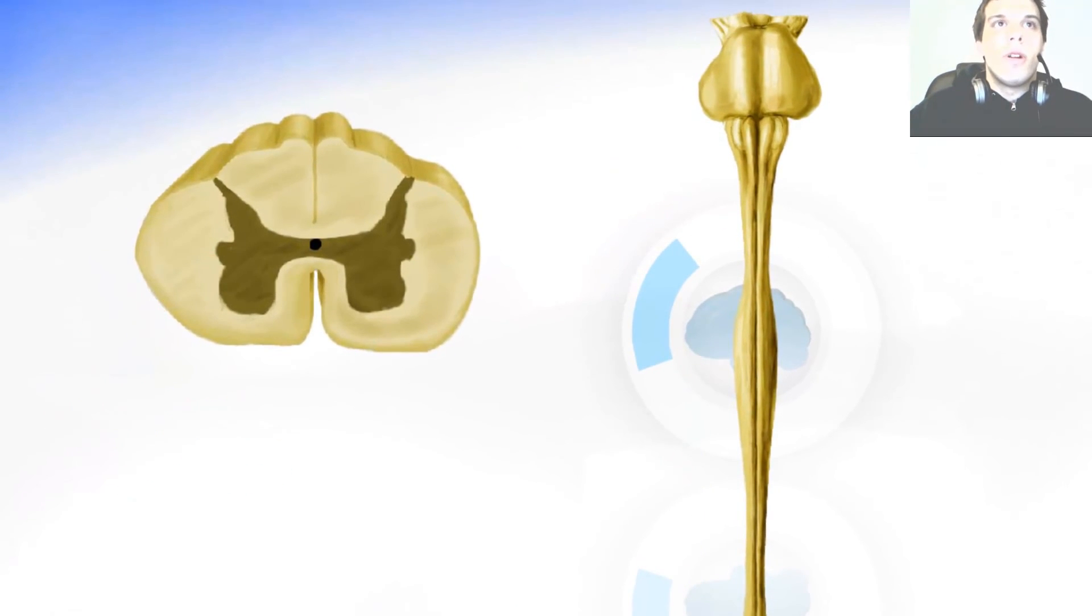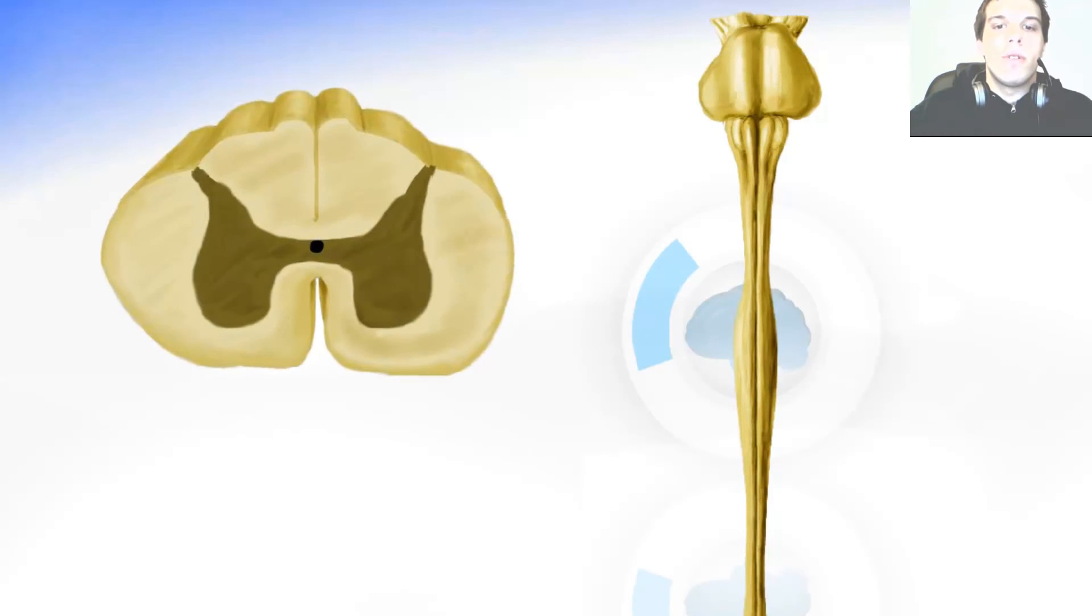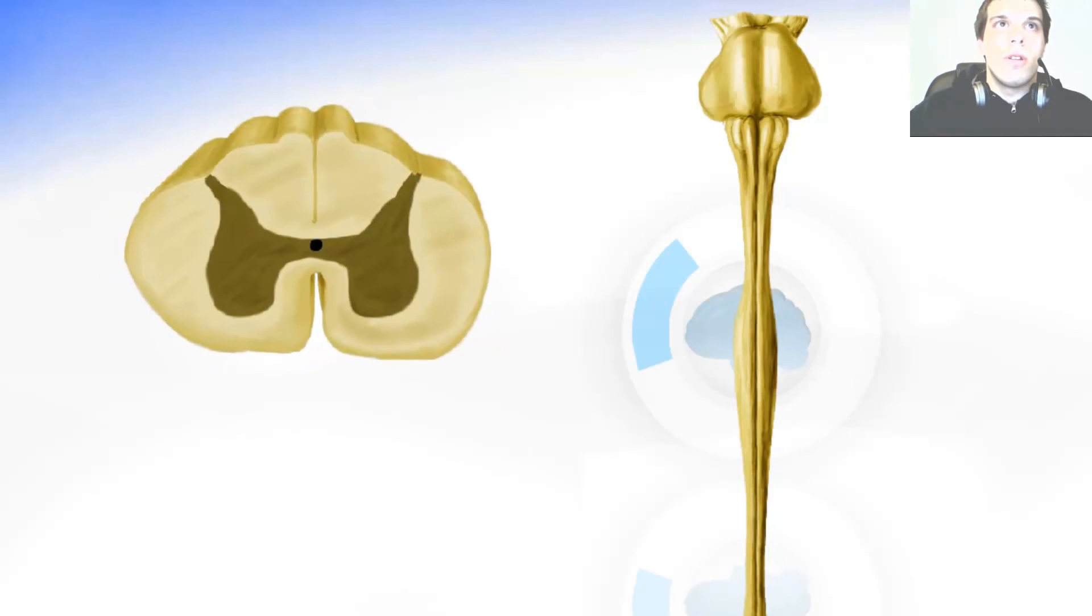Now the lumbar part is going to look different. It's going to be bigger and have different gray matter shape. And of course then comes the sacral part. It's going to be smaller and also a different gray matter shape.